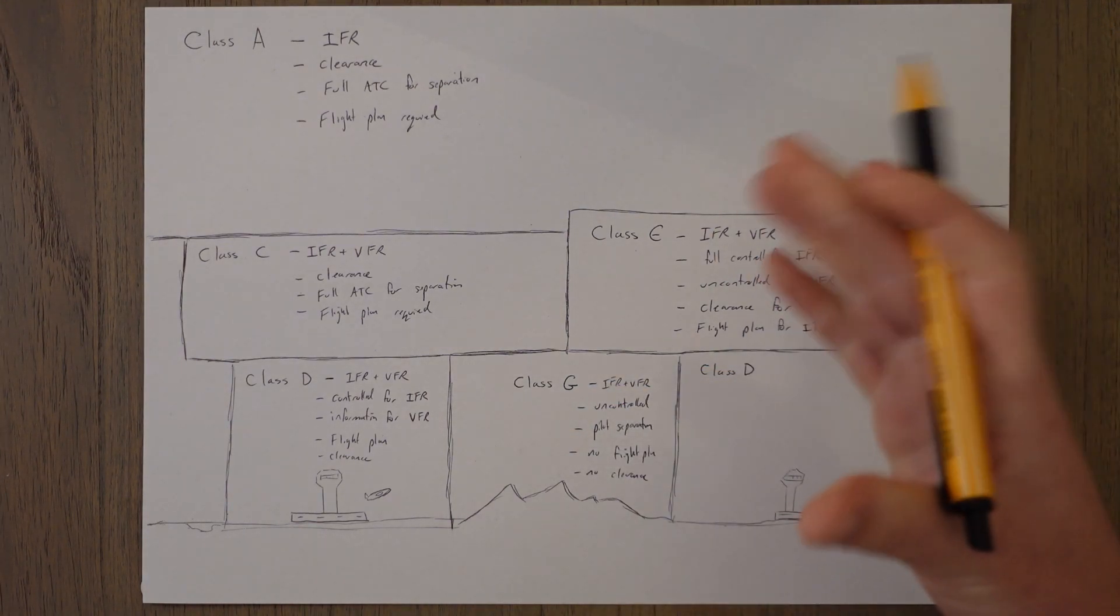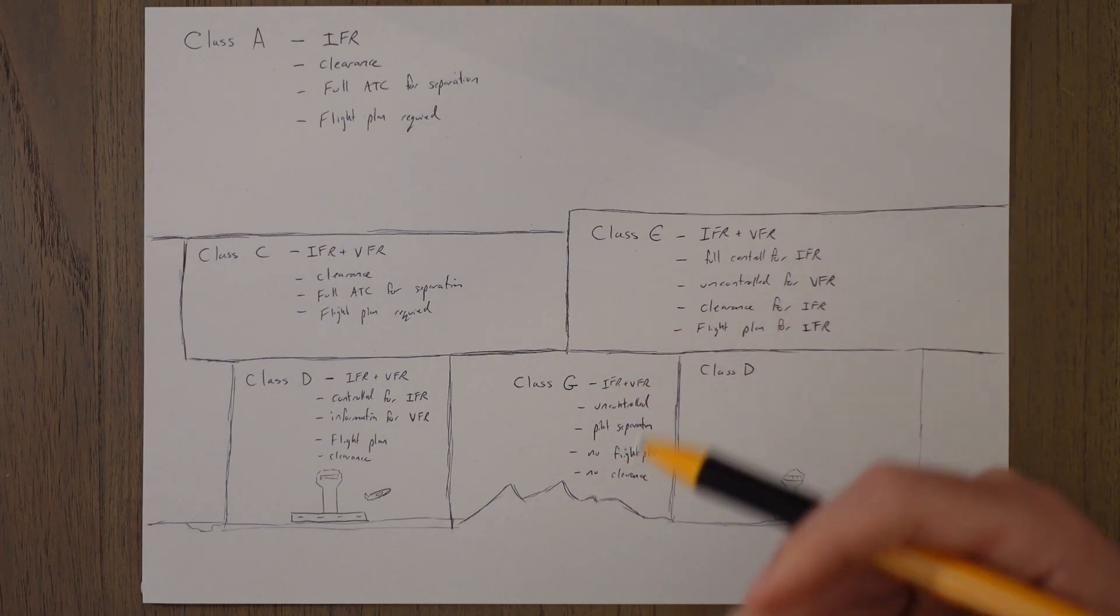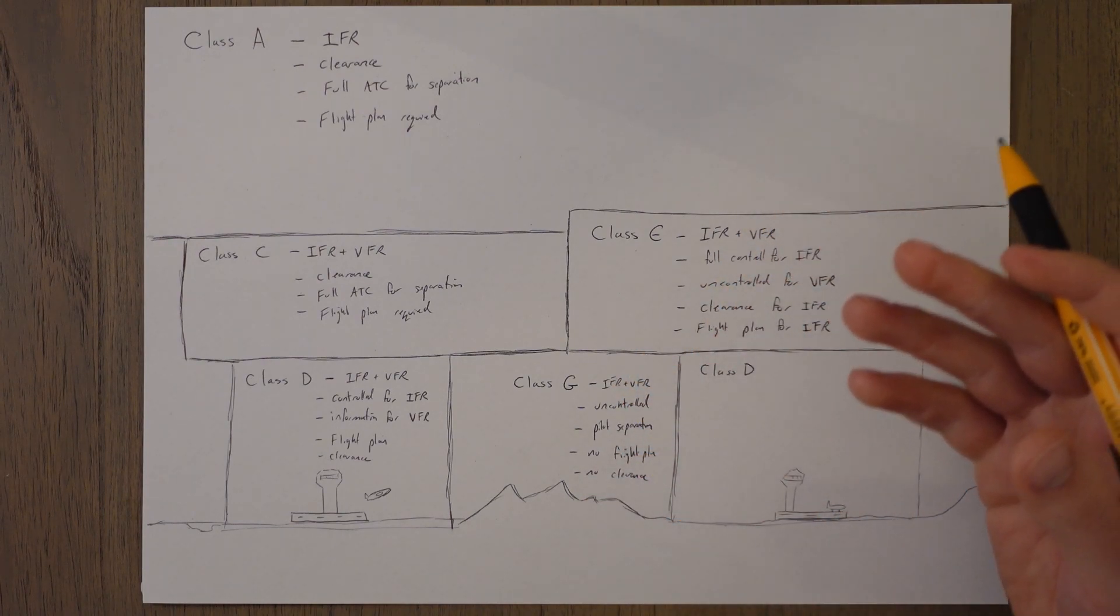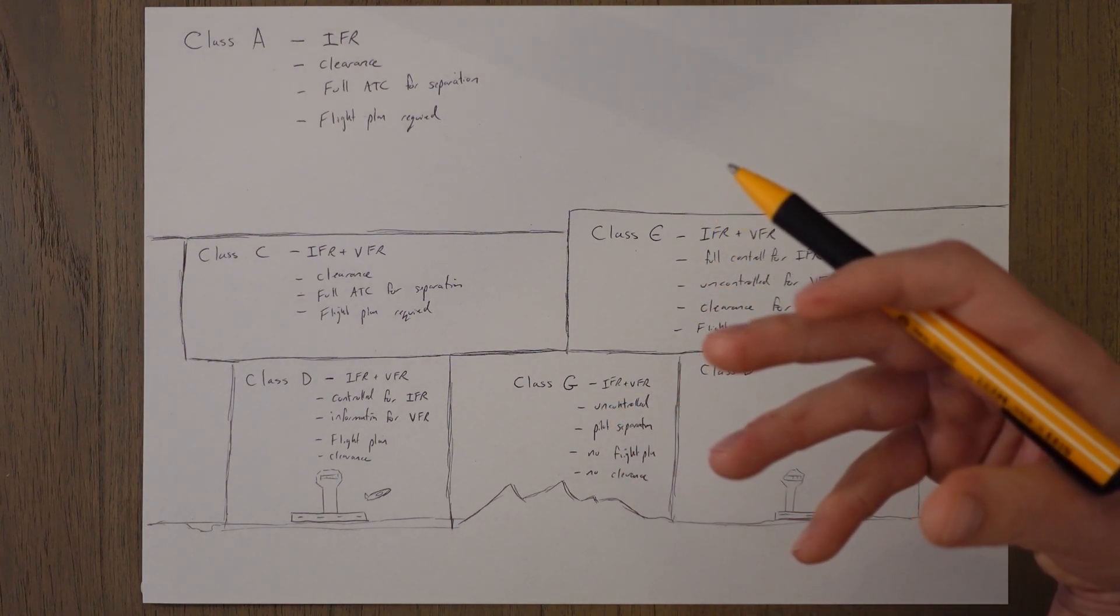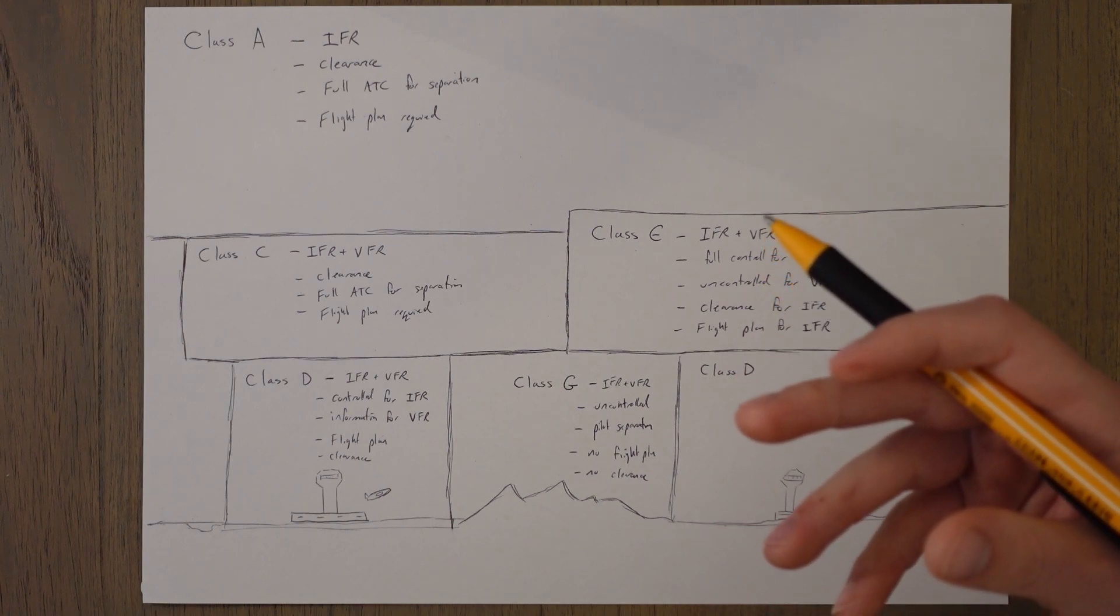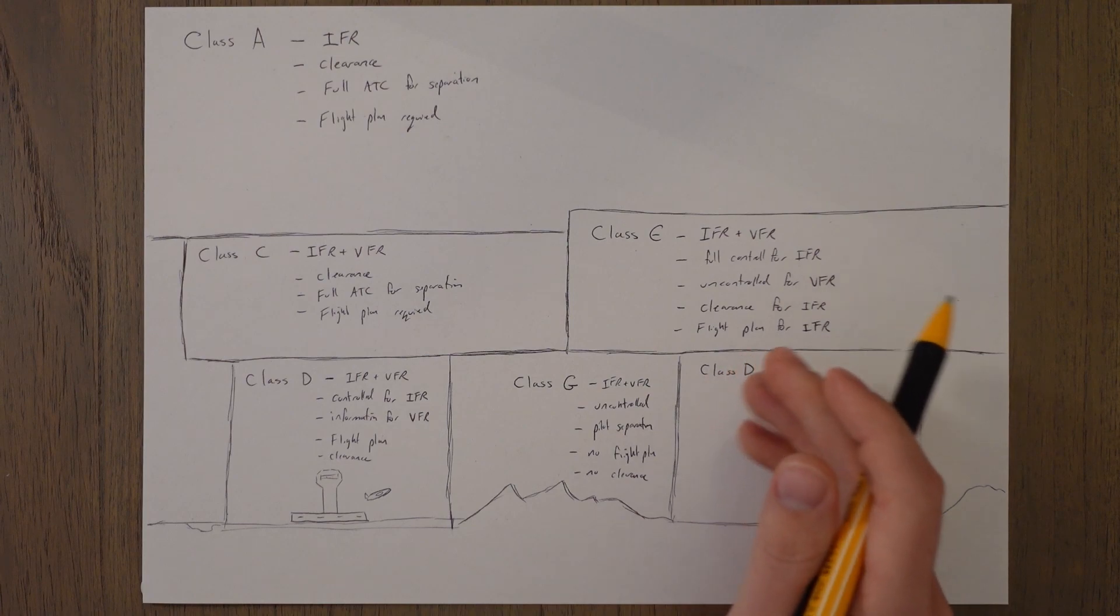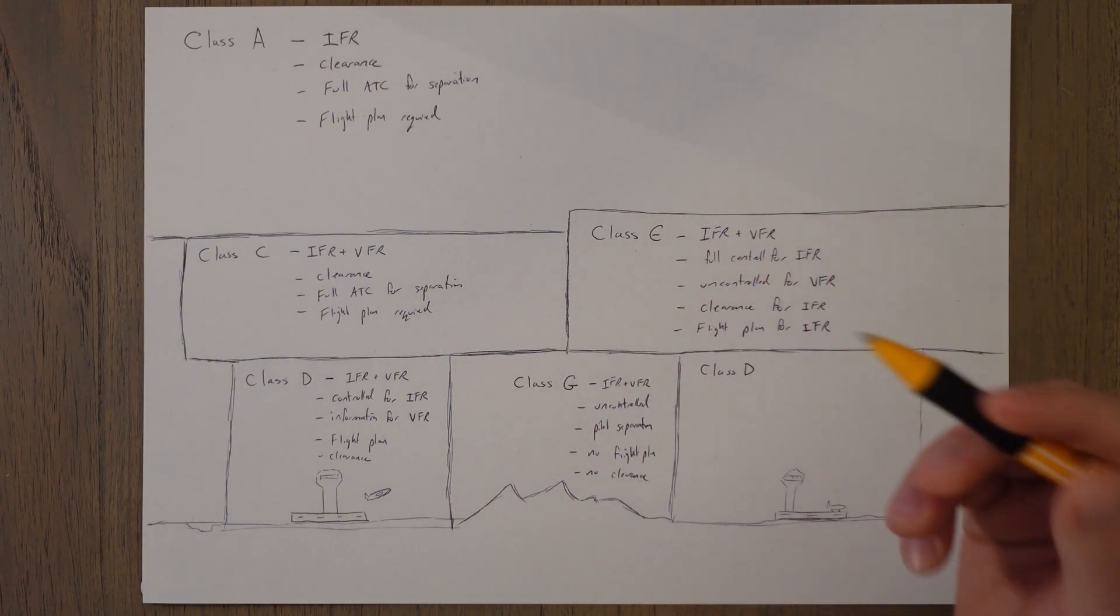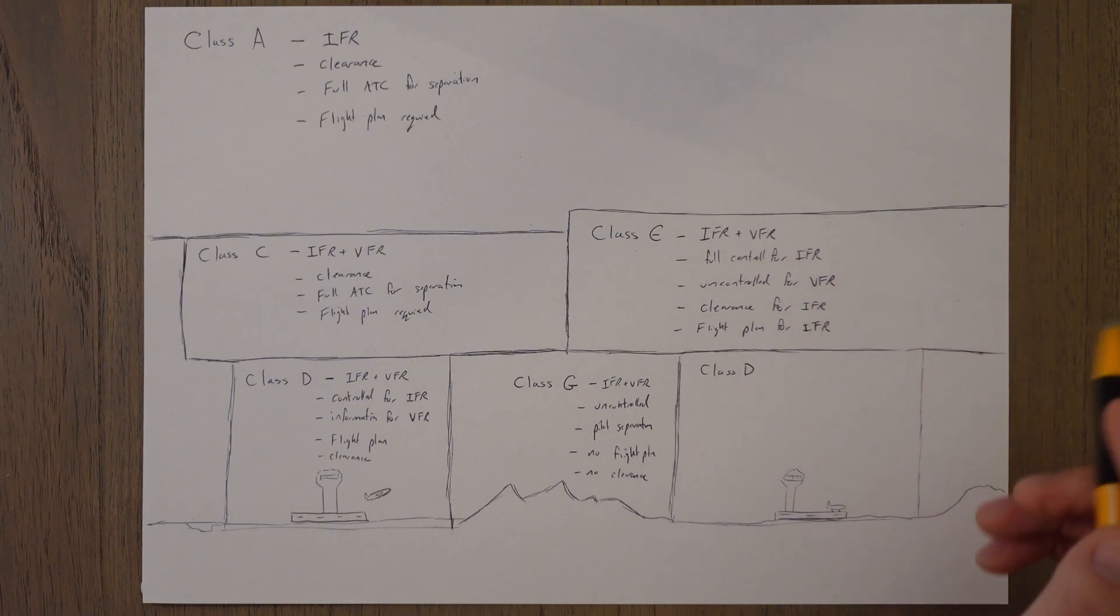Class G is what we call uncontrolled airspace so you can fly in it if you're IFR or VFR but you get very little help from air traffic control. They'll give you maybe a basic service which is what you can use to ask for QNH or maybe the weather information at a certain airport, but they won't give you any separation between aircraft. It's completely up to the responsibility of the pilots on board the aircraft because it's uncontrolled. It means there's no clearance to enter and there's no flight plan required.